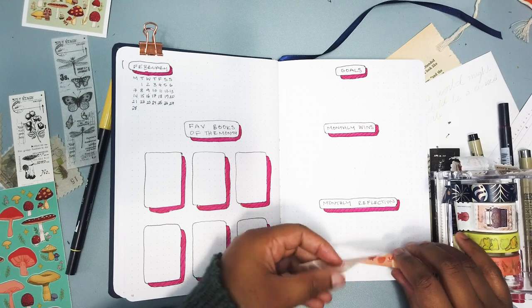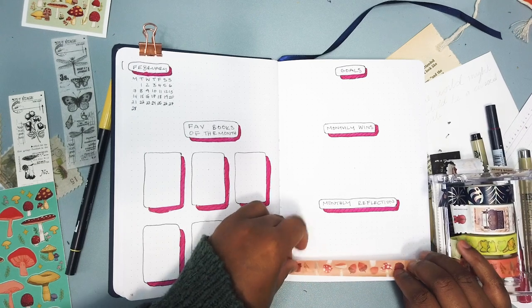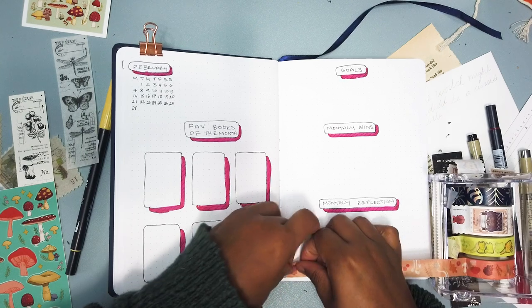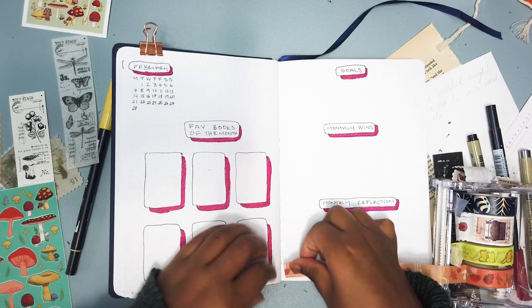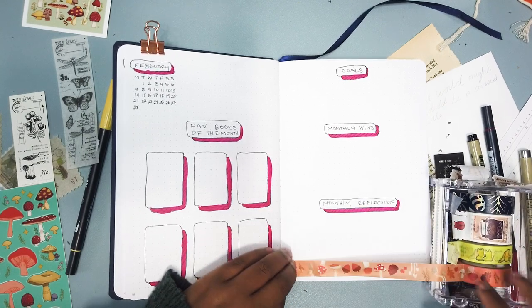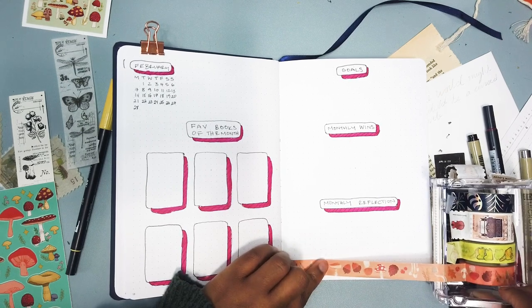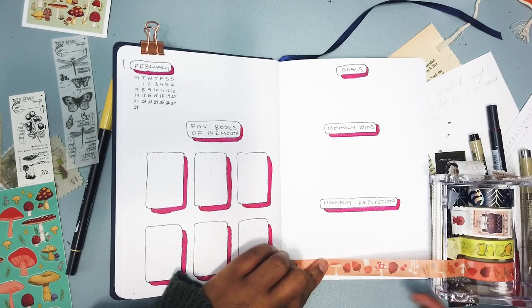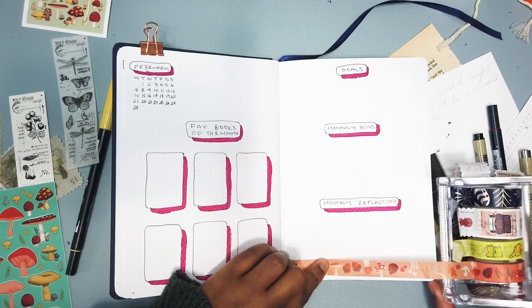And I also got this really cute washi tape that's like a cottage core washi tape but I thought it would work well because it's got mushrooms on it as well. And so I also put that in there. I just realized I had a lot of mushroom themed things.